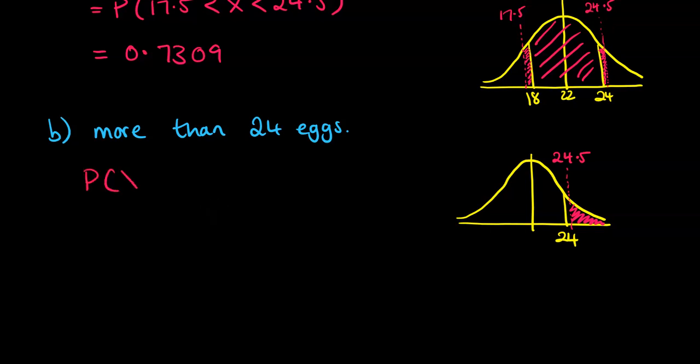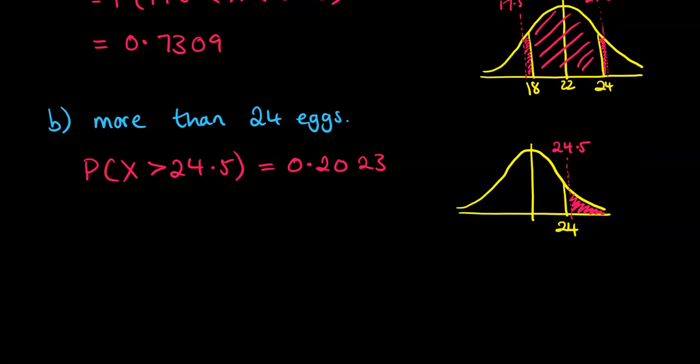So we want to work out the probability that x is greater than 24.5. And putting that into the calculator, we get 0.2023.